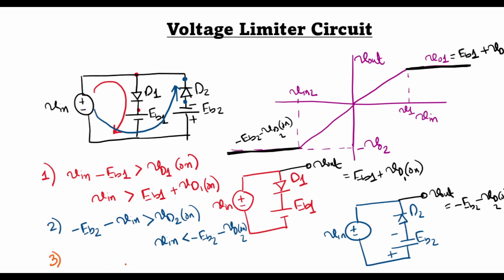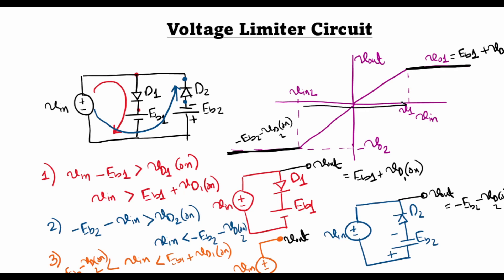Finally, when VIN is less than Eb1 plus Vd_on1 and greater than minus Eb2 minus Vd_on2, neither of the two diodes is forward biased. The circuit is simply the input voltage source in open circuit, and the output voltage equals the input voltage. This is the linear region in between, and this completes the description of the simple voltage clamping or voltage limiter circuit.